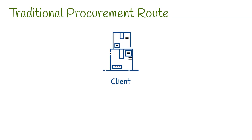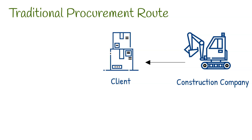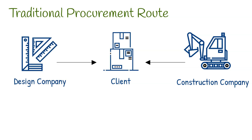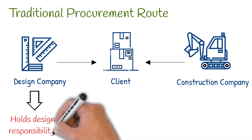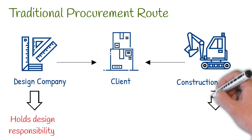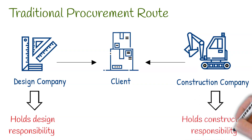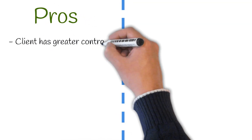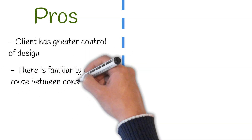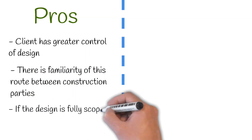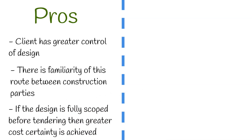Under this method, an employer would engage a contractor to carry out the construction of a project in accordance with the design produced by the employer's professional team. Throughout the construction, the client's design team holds responsibility for the design, while the contractor holds responsibility for the construction. Pros to this route include: the client has greater control of design, there is a familiarity of this route between construction parties, and if the design is fully scoped before tendering, then greater cost certainty is achieved.